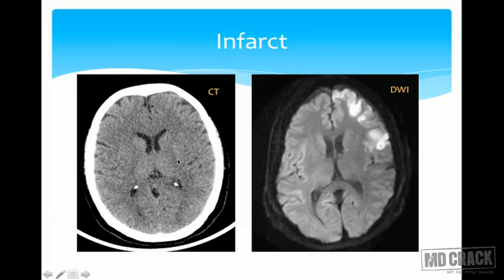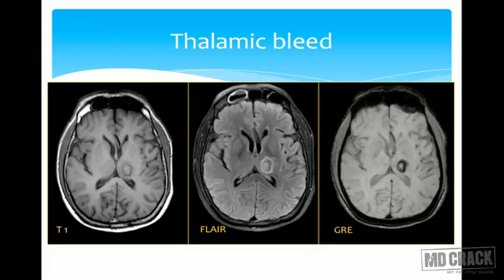A case example: a patient presented within two hours of stroke. The CT was unremarkable, but diffusion-weighted imaging of the same patient showed areas of restricted diffusion in the left frontoparietal cortex, suggestive of an acute non-hemorrhagic infarct.